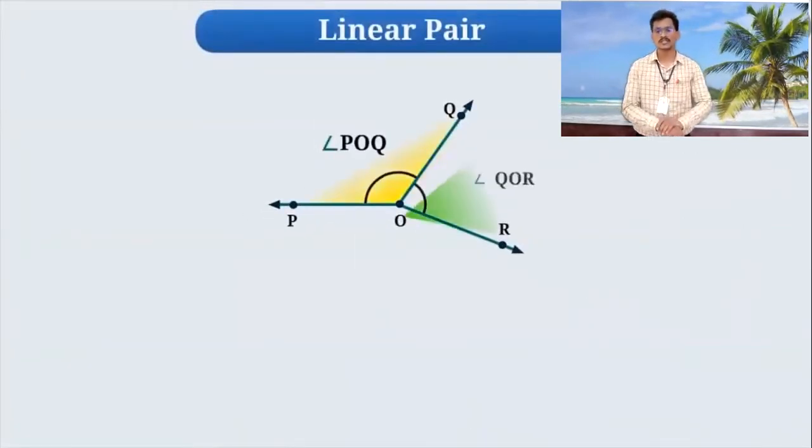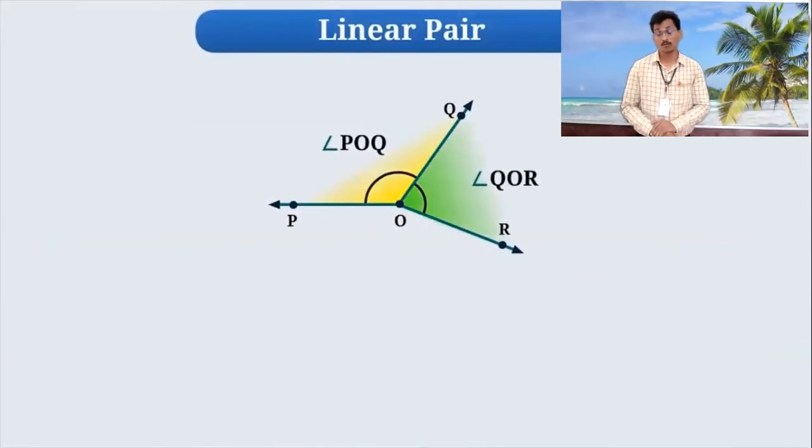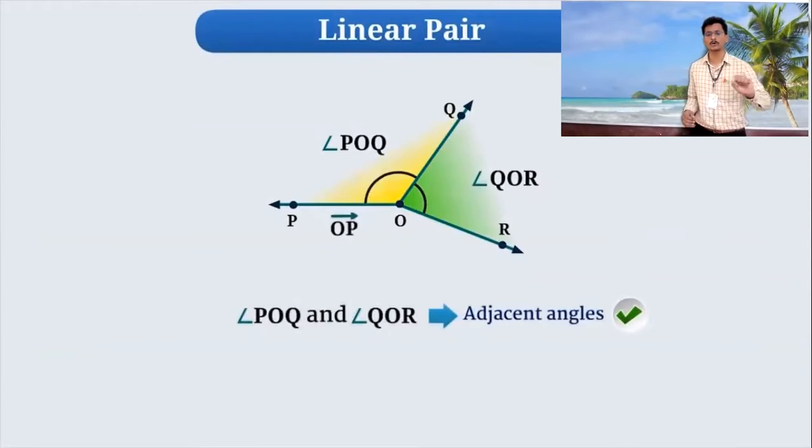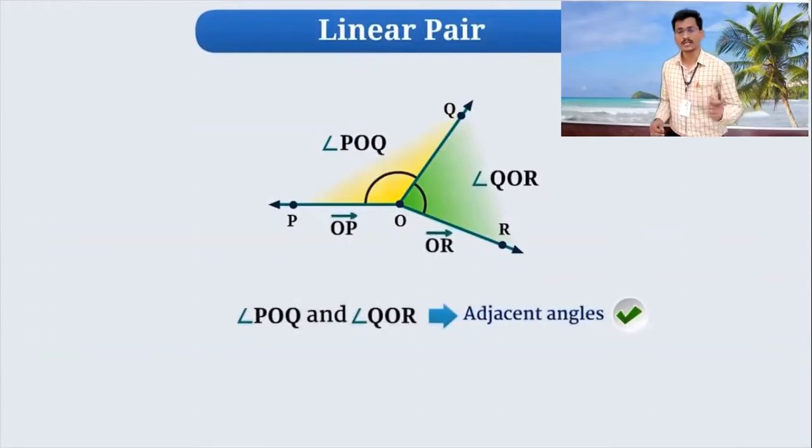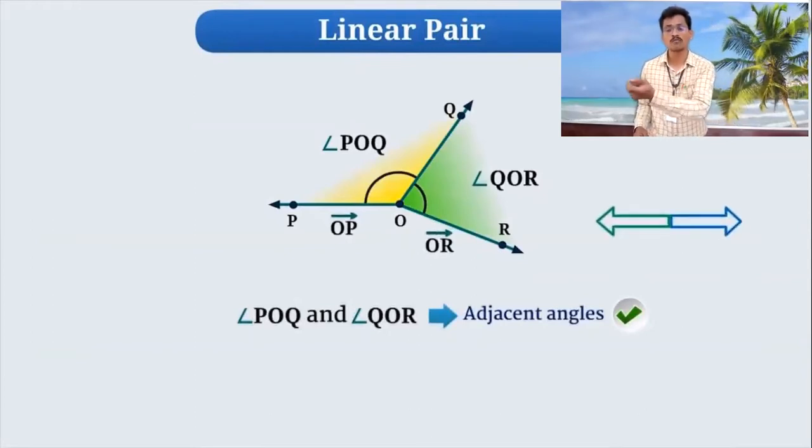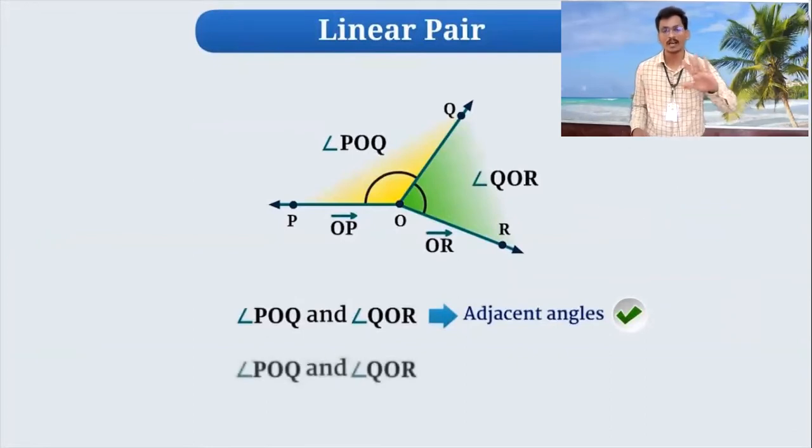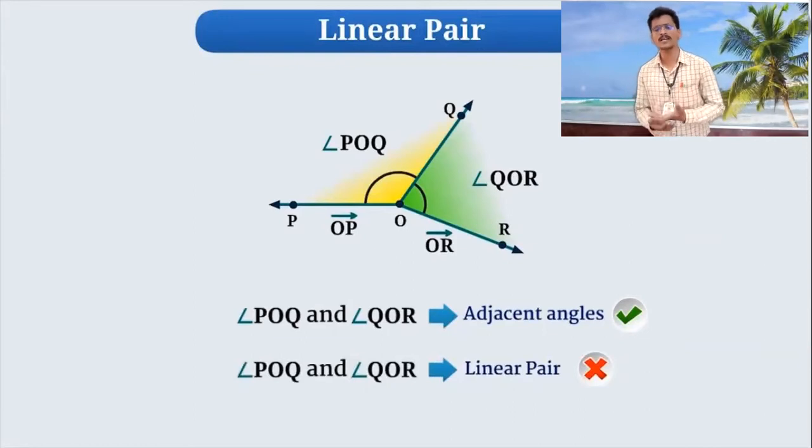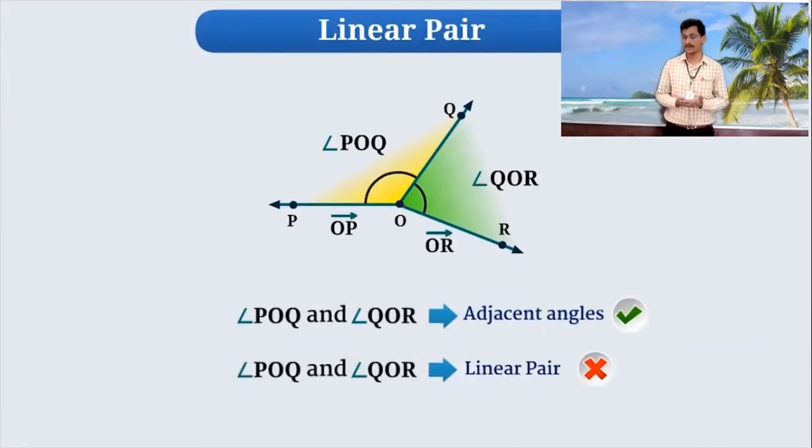Now observe this. Is it linear pair? Think once. So these are adjacent, no doubt. But they are not on one line. So we cannot consider them as linear pair. So what type of angles are linear? For that purpose, we may check this figure.